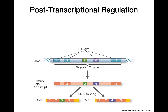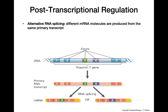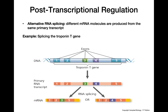Now we can look at post-transcriptional regulation — regulation that occurs after transcription has finished. One way this is done is through alternative RNA splicing, which produces different mRNA molecules from the same primary transcript. An example is the troponin T gene. Looking at the DNA with its different introns and exons, once the primary transcript is made, the cell chooses which exons to include or exclude from the mature mRNA.